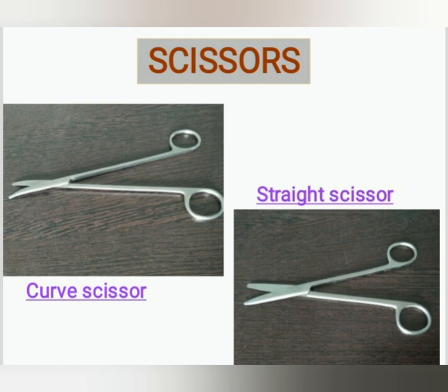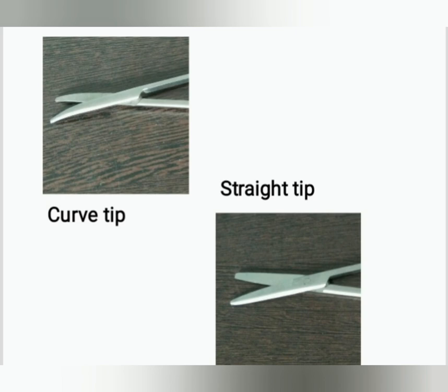The second most common instrument is the scissor. There are many types of scissors available in hospital, like small, medium, and large size scissors, and curved and straight scissors. Today we will discuss about curved and straight scissors. The main difference is that curved scissors have a curved tip and straight scissors have a straight tip, and straight scissors have a sharper blade compared to curved scissors.